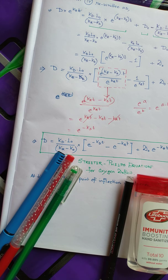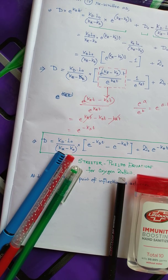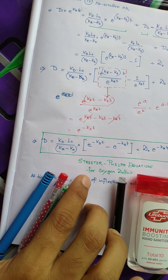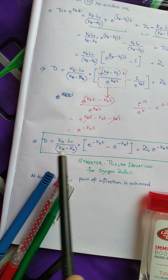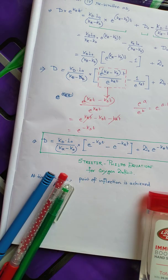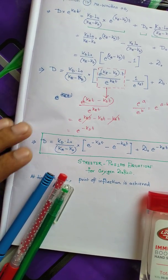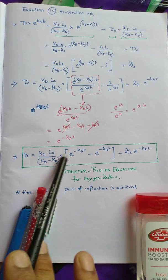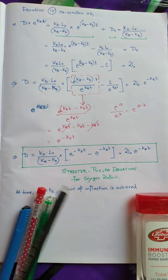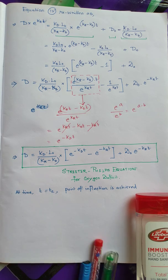Welcome back students. This is another tutorial in the series on the Streeter-Phelps equation. In the last tutorial we derived this big equation, and now we are going to derive Tc, the critical time.